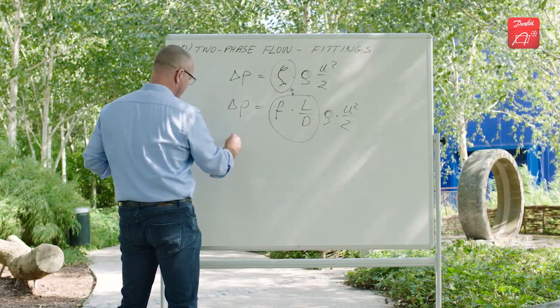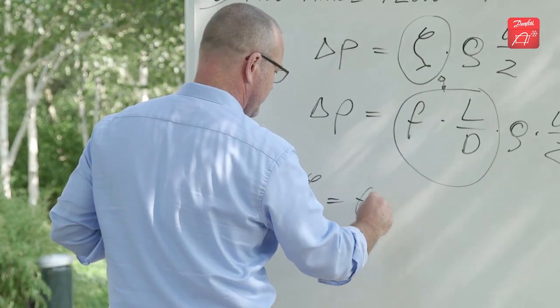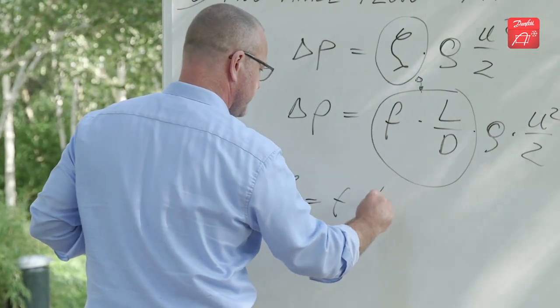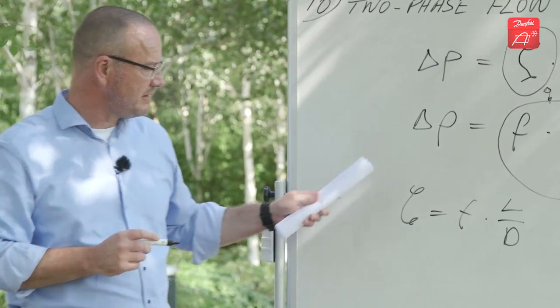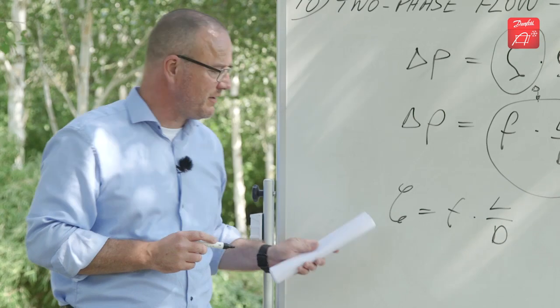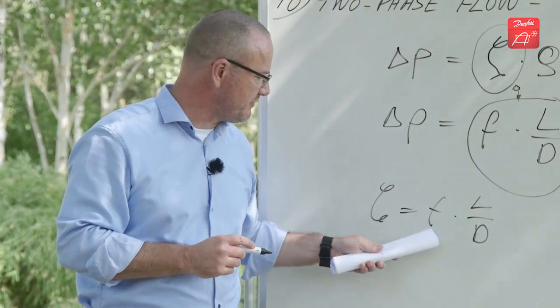So if we write that the resistance coefficient is equal to a friction factor times L over D, it actually means that to calculate a fitting you could as well calculate a pipe with a friction factor F.